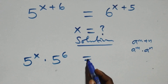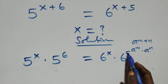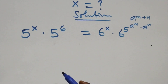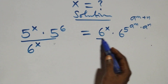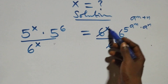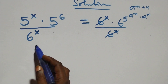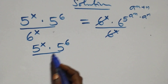On this side we also have 6 raised to power x times another term. The next step is we want to separate the terms with x to one side and the constants to the other side. So we divide both sides by 6 raised to power x, such that on this side 6 raised to power x cancels out. We are still left with 5 raised to power x times 5 raised to power 6, all over 6 raised to power x.